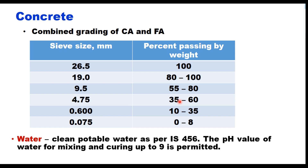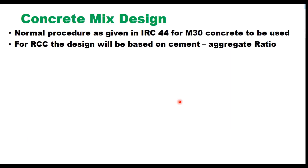Water should be clean potable water as per IS456, with pH value up to 9 for mixing and curing. Normal concrete mix design procedure as given in IRC 44 for M30 concrete is to be used — based on water-cement ratio and compressive strength to determine proportioning of cement, sand, and coarse aggregate. However, when using roller compacted concrete, design is not based on water-cement ratio since RCC has a very low water-cement ratio; instead, design is based on aggregate-cement ratio, similar to what is done for dry lean concrete.